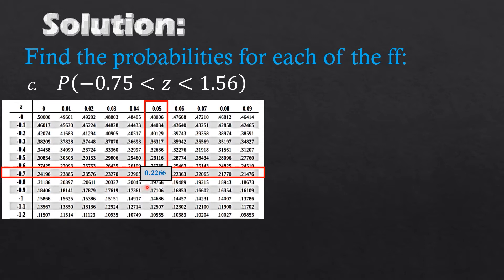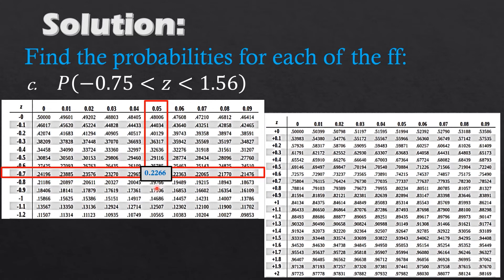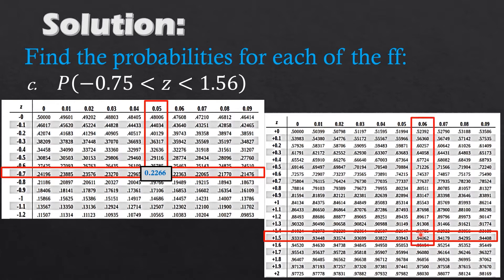The area for negative 0.75 to the left is 0.2266. For the positive z-table, we look at the area for 1.56. We have 1.5 plus 0.06, and the intersection gives us 0.9406. So we now have the probabilities for both z scores.